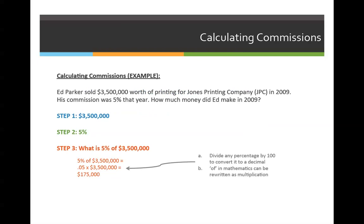Let's go through another example. Ed Parker sold $3,500,000 worth of printing for Jones Printing Company in 2009. His commission rate was 5% that year. How much money did he make? Step one: we must identify how much he sold. We want to know how much he earned in all of 2009, so we confirm the total sales are from 2009 — $3,500,000.